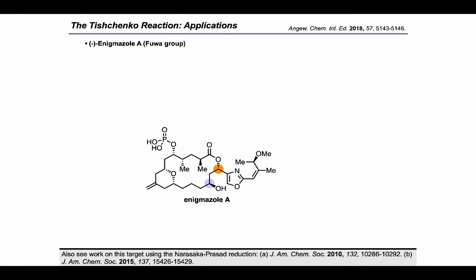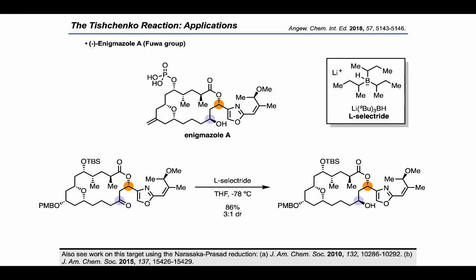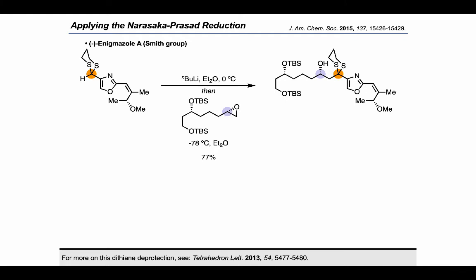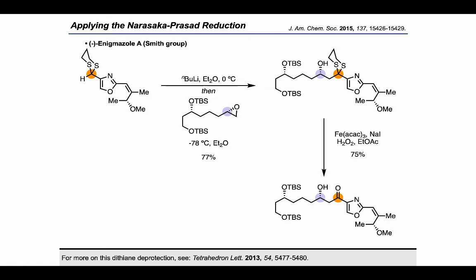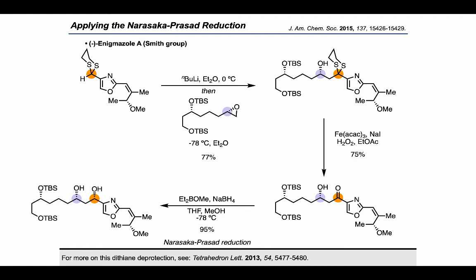Here I want to take a short detour to look at the other 1,3-diol motif in the target. In the current synthesis by the Fula group, that diol was established through a reduction with L-selectride, which gave a 3-to-1 diastereomeric ratio. However, as the Evans-Tyshenko is not the only reaction in our toolbox for setting up a 1,3-diol motif, I want to turn our attention to the Smith Group's approach to enigmozole A. In the Smith Group's route, they deprotonated the dithiane and used that to open a terminal epoxide, providing a masked beta-hydroxyketone motif. The beta-hydroxyketone could then be revealed using the conditions shown, after which it could be used in a Narasaka-Prasad reduction to give a syn-1,3-diol motif in the product. Importantly, that stereochemical outcome is complementary to that observed in the Evans-Tyshenko reaction, which provides anti-1,3-diol monoesters.